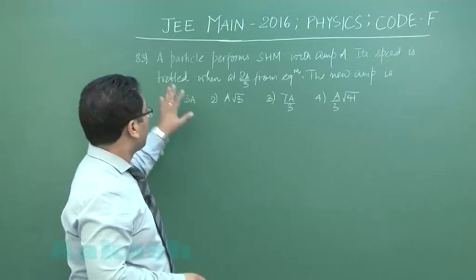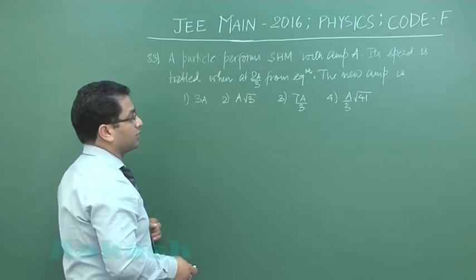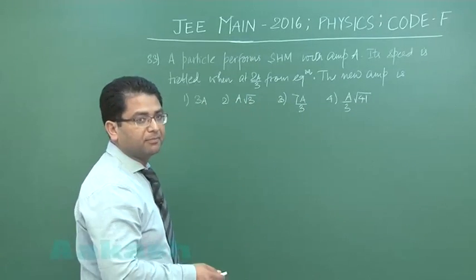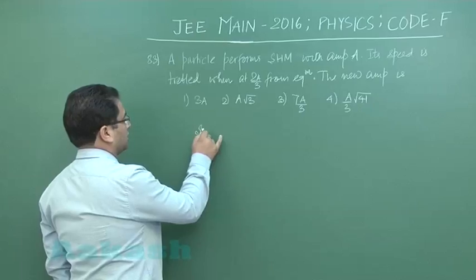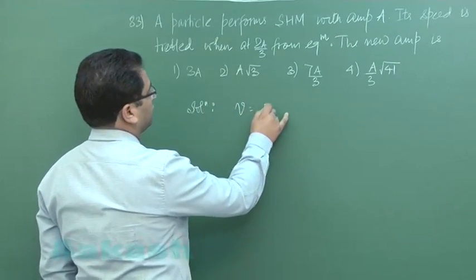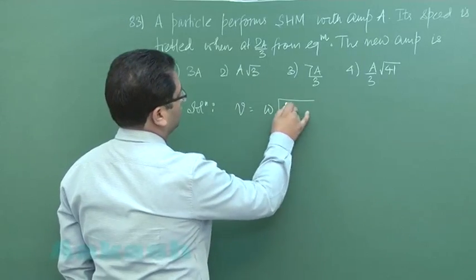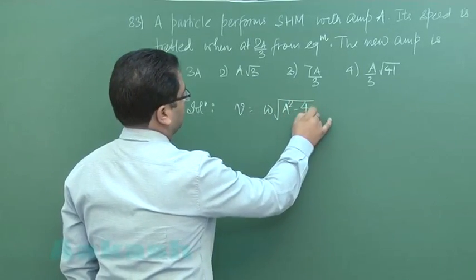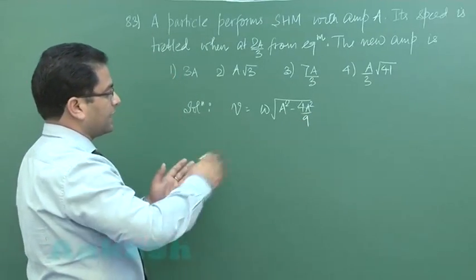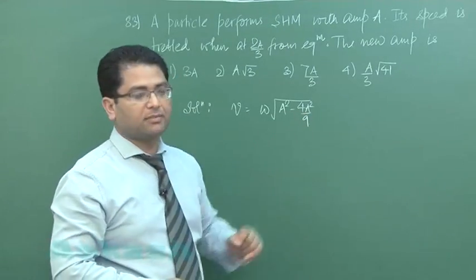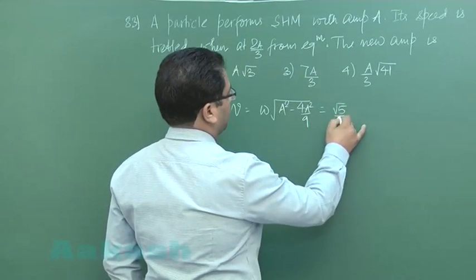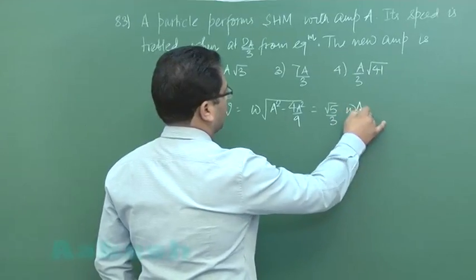A particle performs SHM with amplitude A and its speed is v when at 2A by 3 from equilibrium. The speed at 2A by 3 from equilibrium is omega root A square minus 4A square by 9 because the formula for speed at any distance is omega root A square minus X square, which comes out to be root 5 by 3 times omega A.